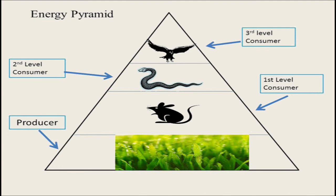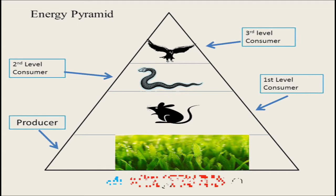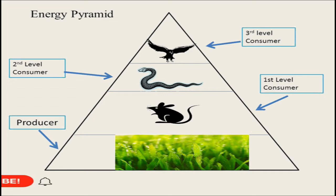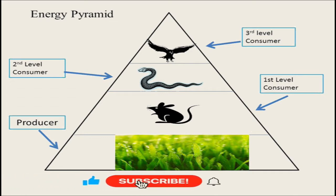The components of the environment are mainly classified into producer, first or primary consumer, second or secondary consumer, and third or tertiary consumer. Tertiary consumers get decomposed by decomposers.